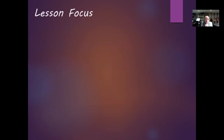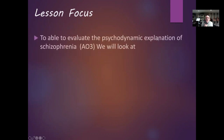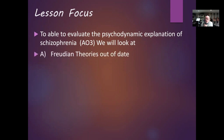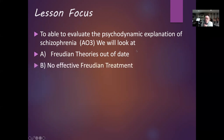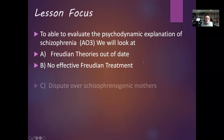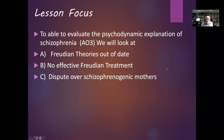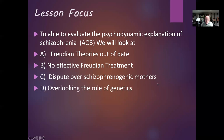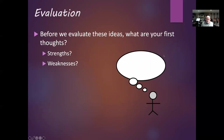Today's lesson focus is evaluating the psychodynamic explanation of schizophrenia using the following ideas: first, that Freudian theories are out of date — Freud was sharing his ideas well over 100 years ago. Second, there isn't an effective psychoanalytic treatment for schizophrenia. Third, there's quite a lot of argument over schizophrenogenic mothers. And fourth, Freud has been criticised for overlooking the role of genetics.